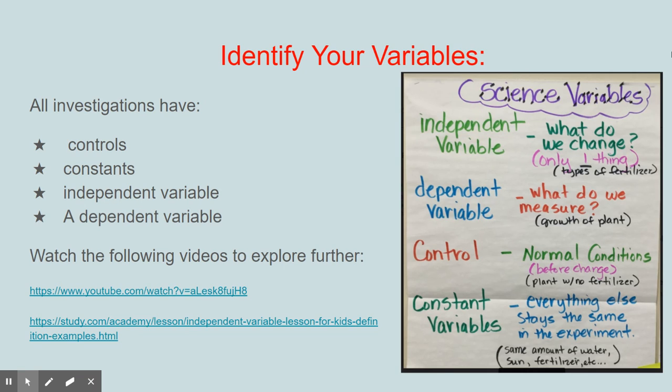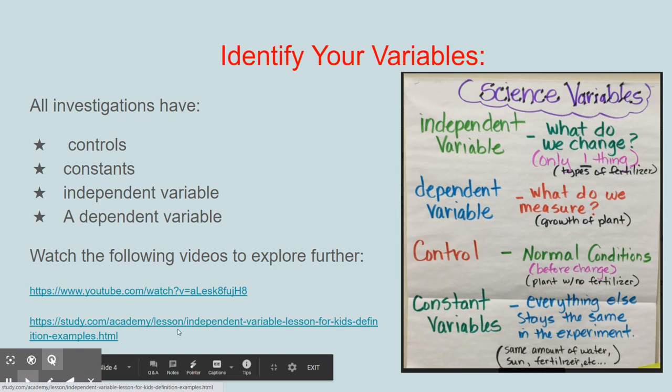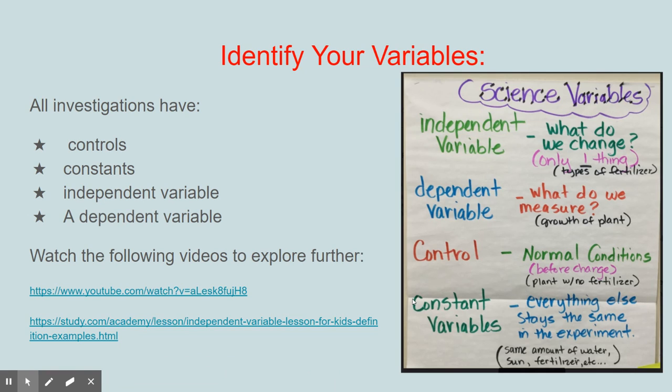Now the independent variable and the dependent variable sometimes are hard to remember. I want you to think about the independent variable as the thing that you change. Going back to my example, if I want to know if a particular fertilizer makes a plant grow faster, that's my independent variable. The dependent variable is the variable that will change depending on what you do to the independent variable. The plant in this situation is the dependent variable because whether it grows faster or slower or not at all depends on what you do with the fertilizer, which is the independent variable.